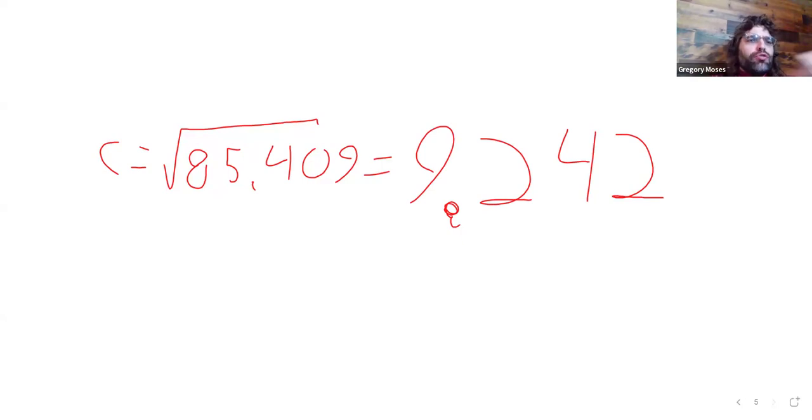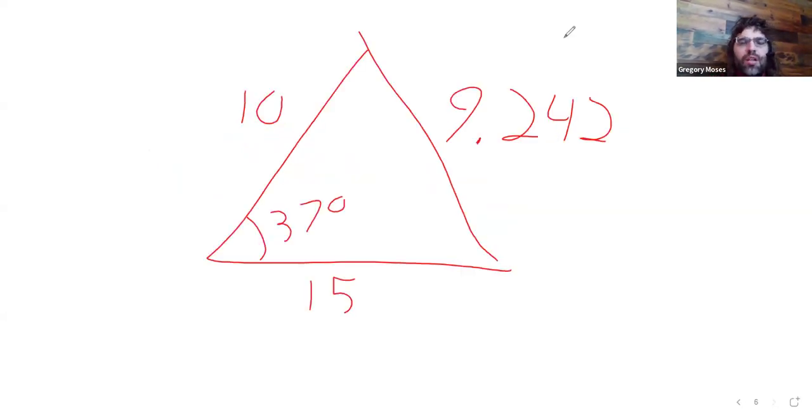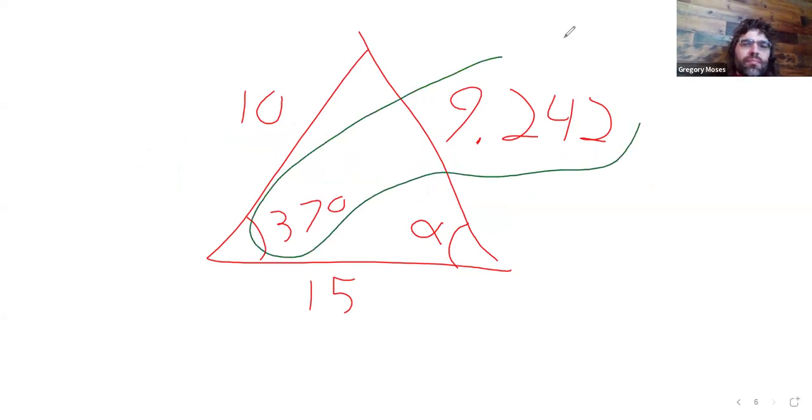Frequently, if you're trying to solve a triangle, you'll end up using both the law of cosines and the law of sines. So, continuing with this triangle, here's what we know. If we then wanted to find this angle alpha, we could do it using the law of sines. Together with this 37 and this 9.242.